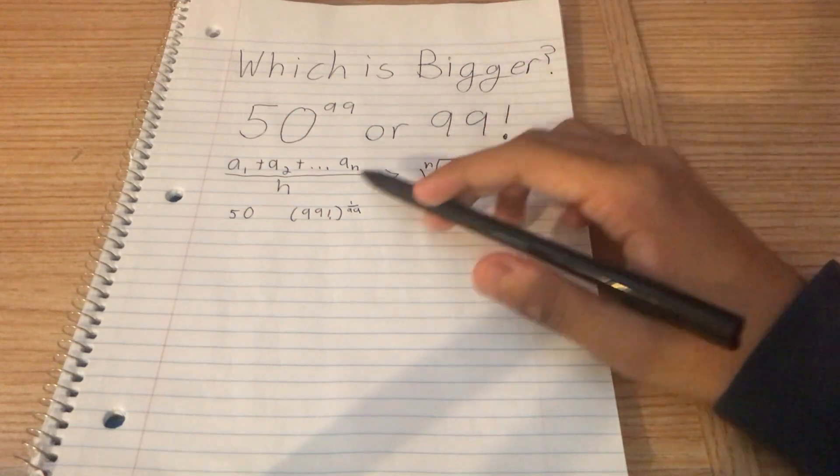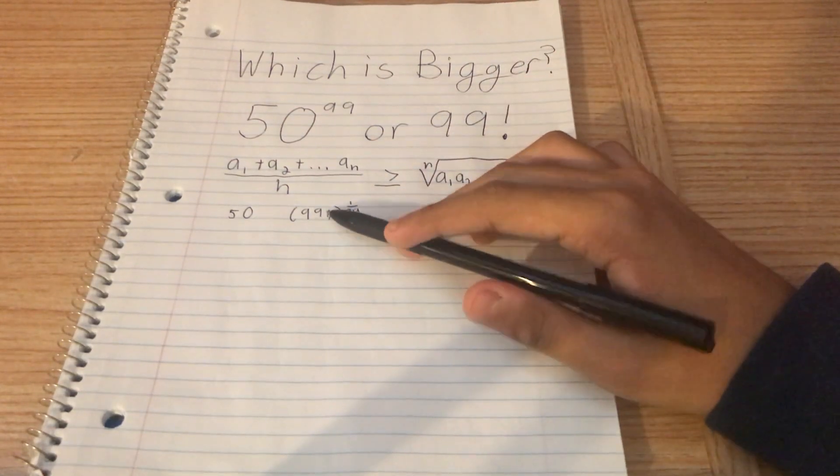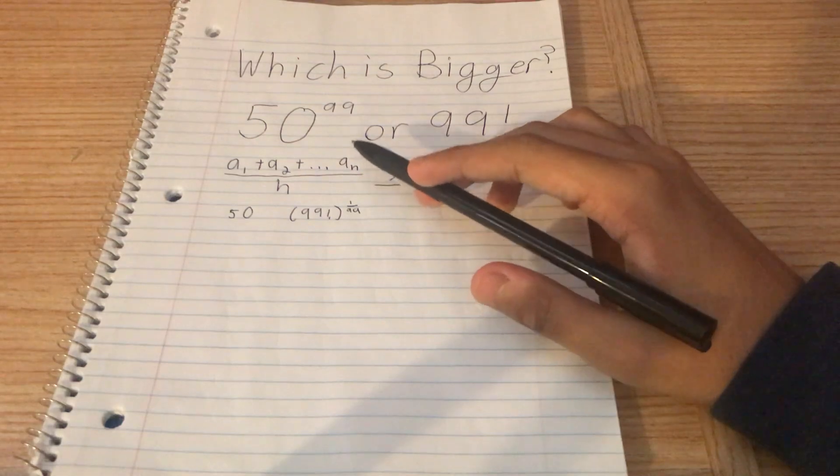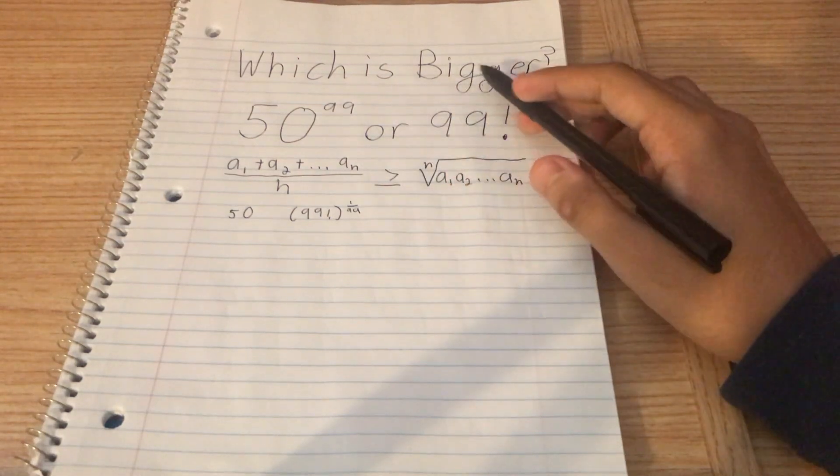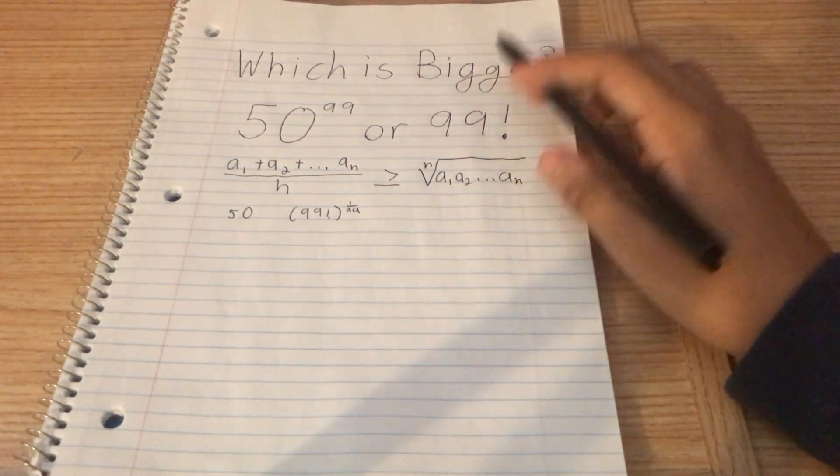Now we notice something. Look at this right here. 99 factorial. What does that mean? Well, it means 1 times 2 times 3 times 4 times 5 all the way to times 97 times 98 times 99.